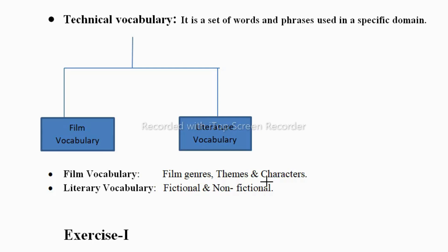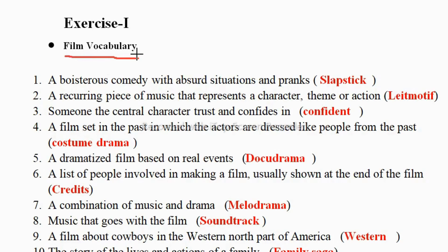Protagonist means hero. Under literary vocabulary — literary is related to writing — we have two types: fictional and non-fictional. Fictional writing is based on imagination, like fables and fairy tales. Non-fictional works are based on real things, like biography, autobiography, diaries, journals, letters, reports, or travelogue. In this topic we are going to discuss the technical vocabulary of film and literature.